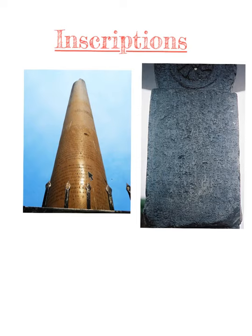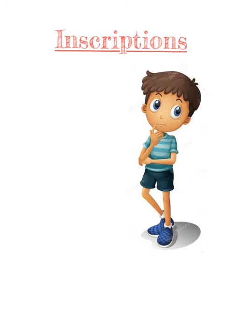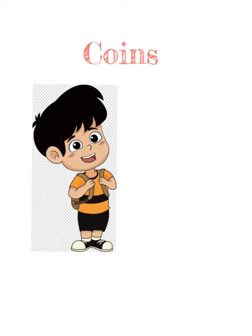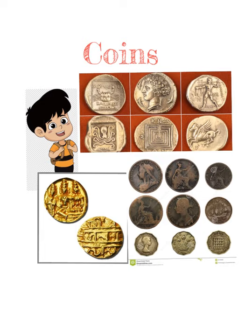This is the Ashokan inscription — it throws light on the social, religious, and administrative conditions of the time. This is the Halmadi inscription, which is the first available inscription in Kannada. The study of inscriptions is known as epigraphy.